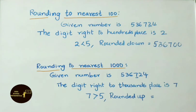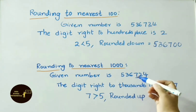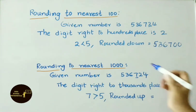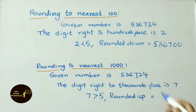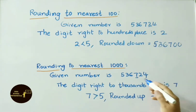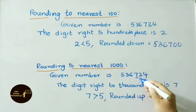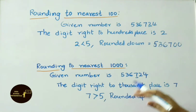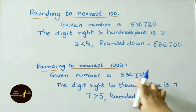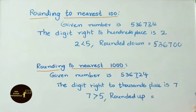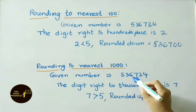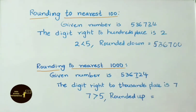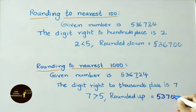Rounding to nearest 1000. Given number is 5,36,724. We check the digit to the right of the 1000s place — that value is 7. Since 7 is greater than 5, we round it up. That means 724 becomes 000, and 6000 rounds up to the next 1000 to become 7000. So 5,37,000 is our answer.